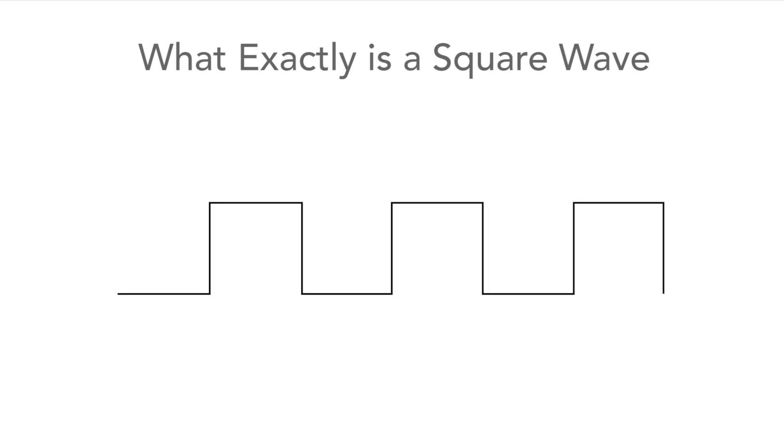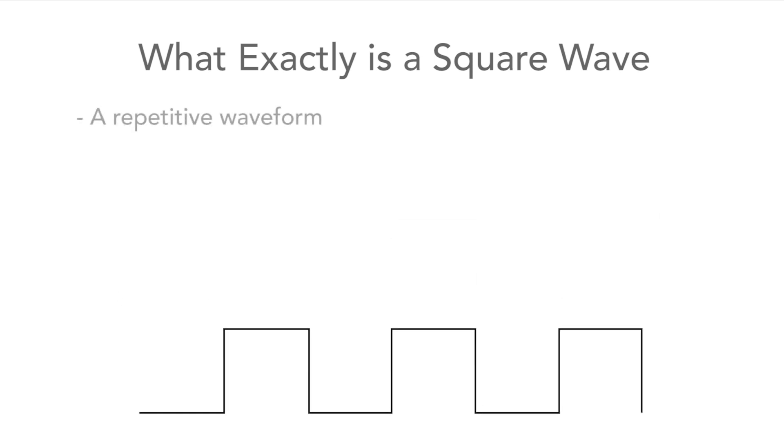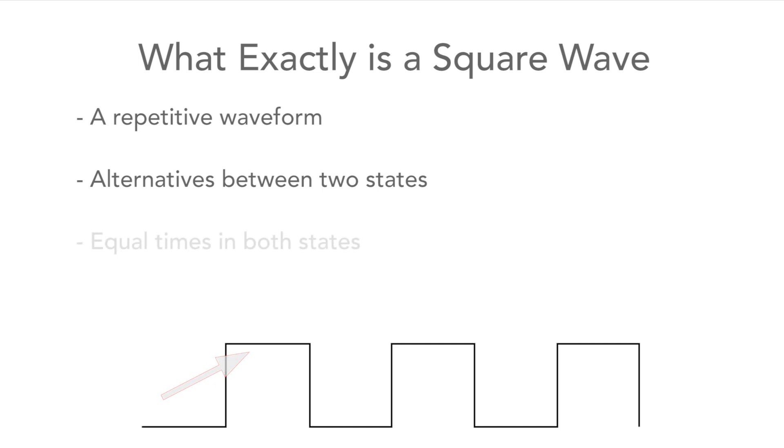Let's define a square wave first. It is a repetitive waveform that alternates between two states and has an equal time in both states as we see here.